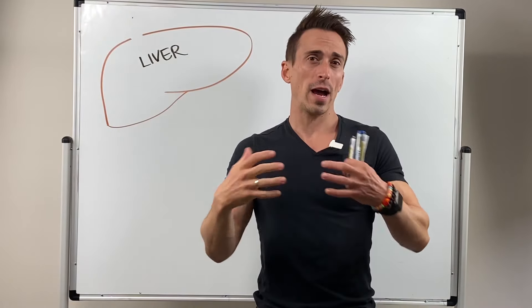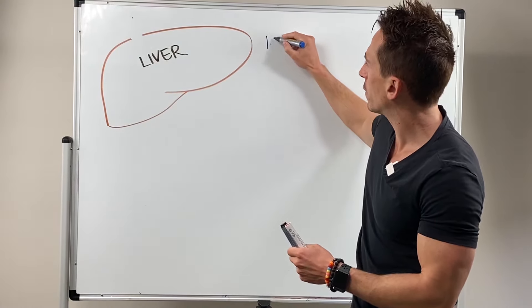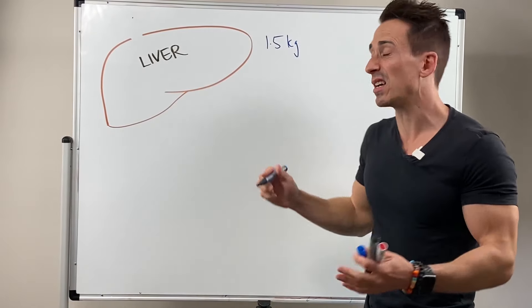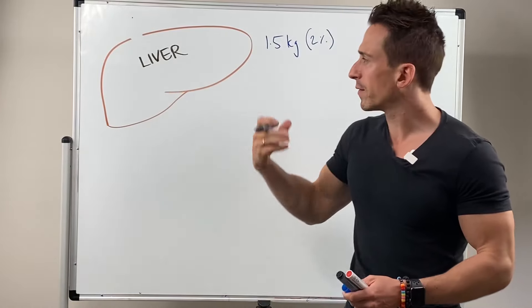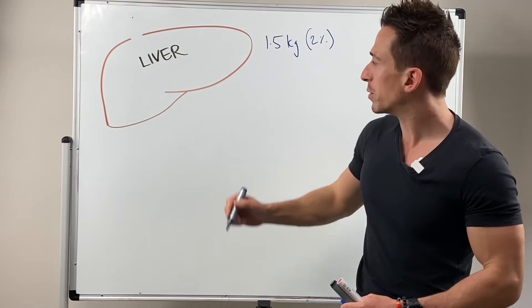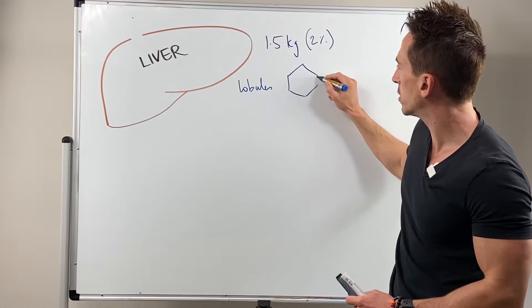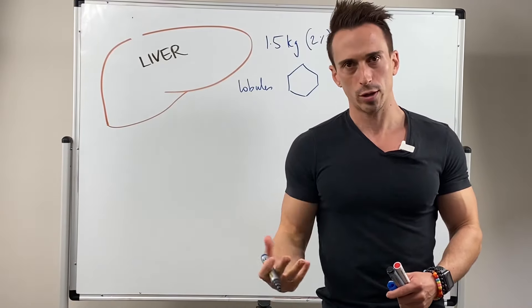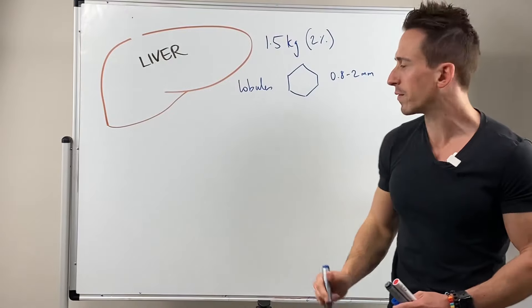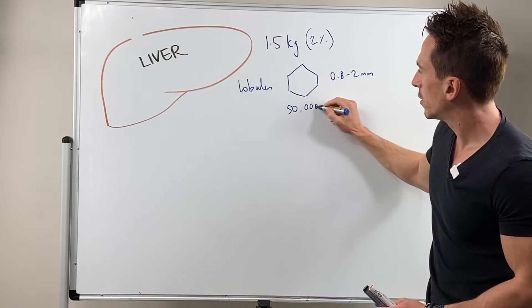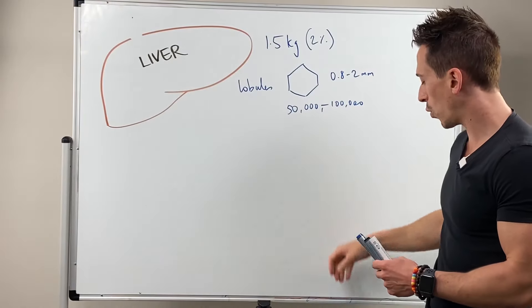To begin with, we need to talk about the liver itself as a structure. We know it's located in the upper right quadrant of the abdomen, and it weighs around about 1.5 kilograms — around about 2% of your body weight — making it the largest organ inside the body. In order for the liver to undergo its many functions, it requires a functional subunit called lobules. Lobules are hexagonal shaped structures inside the liver, between 0.8 to 2 millimeters in diameter, and we've got between 50,000 to 100,000 of them per liver.